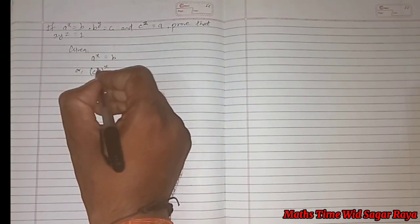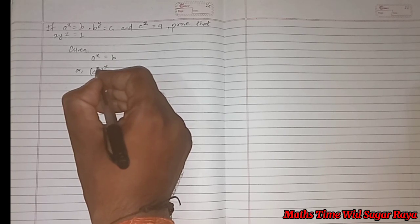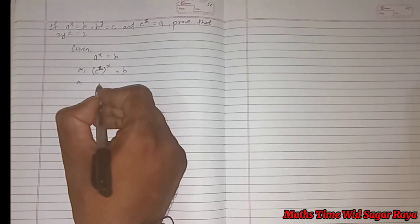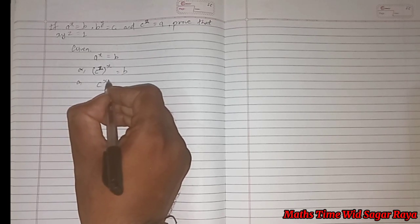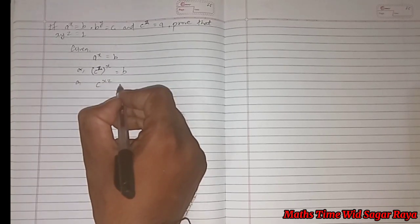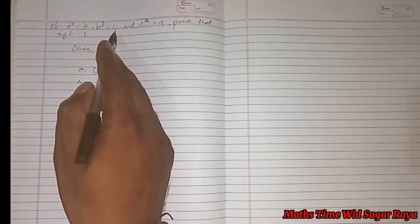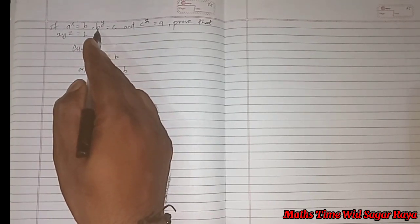Okay, so here it should be c power z equals to b. Similarly, now it will be c power z, and x into z will be xz equal to b. And then value of c will be b power y.